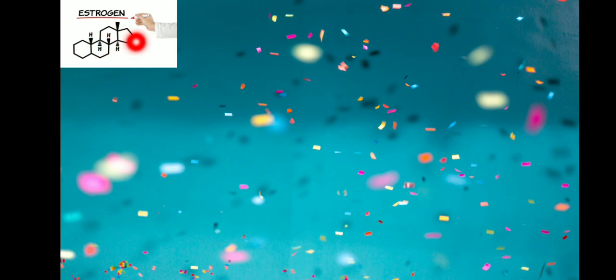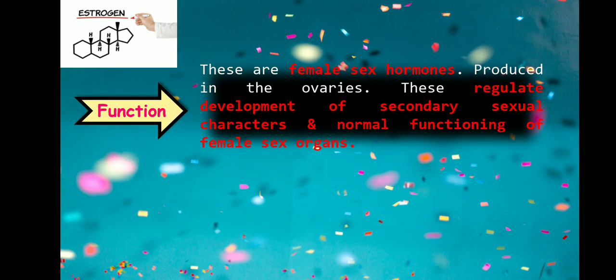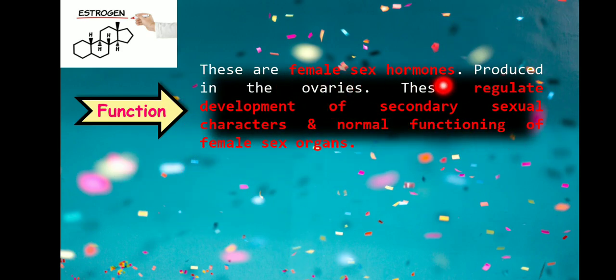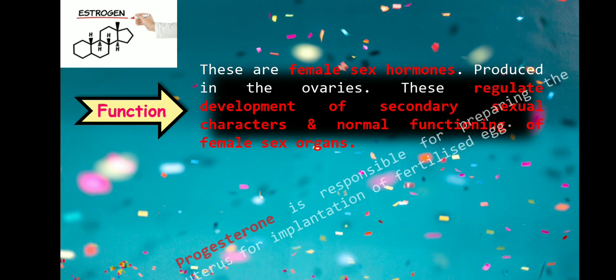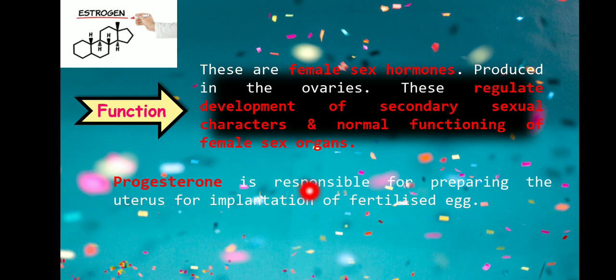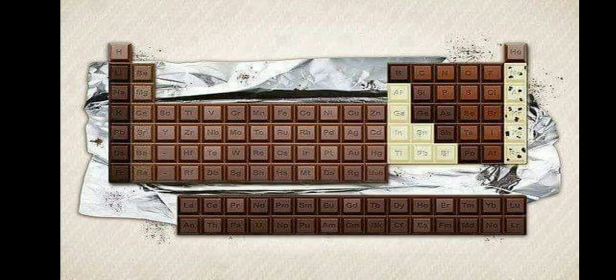The second class is estrogens — female sex hormones produced in the ovaries. These regulate development of secondary sexual characters and normal functioning of female sex organs. One example is progesterone, which is responsible for preparing the uterus for implantation of fertilized eggs. These are the hormones and their functions mentioned in our syllabus.